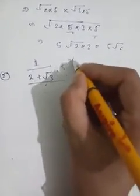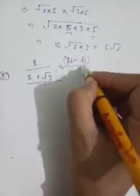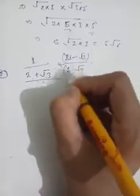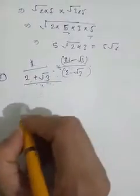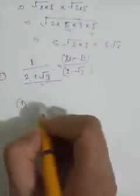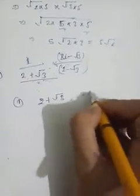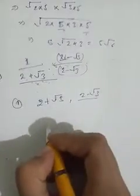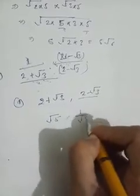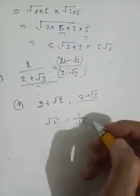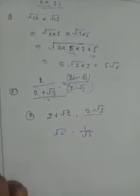For example, if we have 2 plus root 3, we multiply by 2 minus root 3 in both numerator and denominator. So the rationalization factor for 2 plus root 3 is 2 minus root 3. If we have 1 by root 5, then the rationalization factor is root 5. Now solve the exercise, and if you have any problem, ask. Thank you, class.